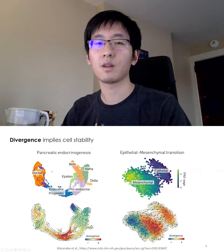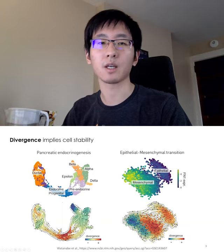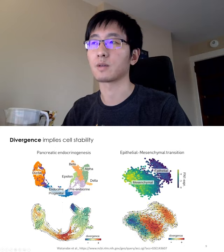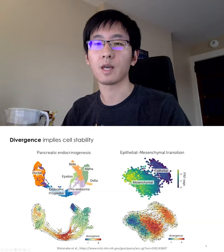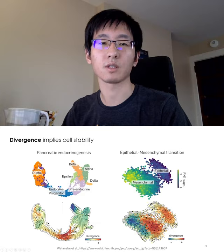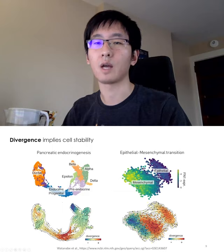Here are the divergence analyses on two experimental data sets. In the case of the pancreatic endocrinogenesis data set, we found positive divergence at the bifurcation point, and strongly negative divergence at the differentiated cell types. This makes sense because bifurcation points usually have diverging velocity flows, while differentiated cell types are usually sinks. In another data set of EMT transition, we found mesenchymal cells, which are endpoints of the transition, have predominantly negative divergence. In conclusion, divergence is a good indicator for identifying endpoint cell types.